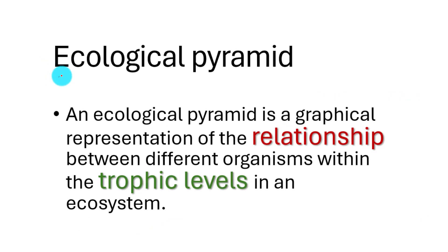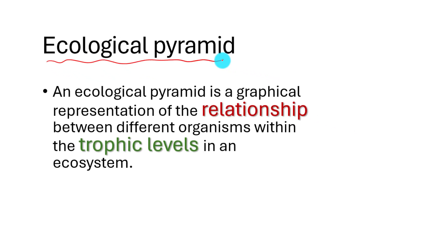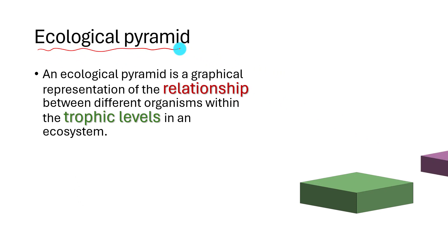An ecological pyramid is a graphical representation of the relationship between organisms within a trophic level in an ecosystem. Two words are important: relationship and trophic level of organisms in the ecosystem.